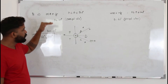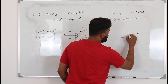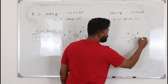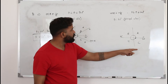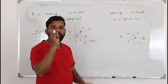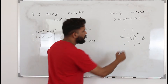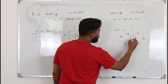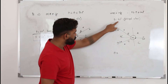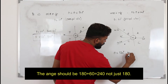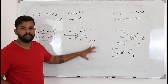Step one: find the principal value — draw the ASTC diagram. The limit is 0° to 360°, which covers all four quadrants. In this case cos θ is negative, so find the quadrants where cosine is negative — that's the second and third quadrants. In the second quadrant the angle is 180° − θ, and in the third quadrant it's 180° + θ, where θ is the principal value of 60°. So the solutions are 180° − 60° and 180° + 60°. This is how we solve trigonometric equations.